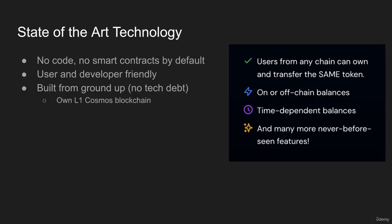We built everything from the ground up using our own blockchain, and we did it in a way that takes on no tech debt — we just tried to build it the right way. This includes being super developer-friendly with no code and no smart contracts by default. By default, I mean probably 95% of use cases will not need any code or smart contracts, and over time we'll add more features to get that number up to 100. It's also super easy to use for users and all parties involved.